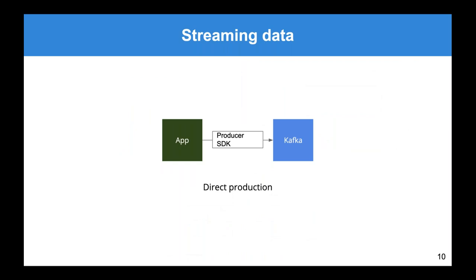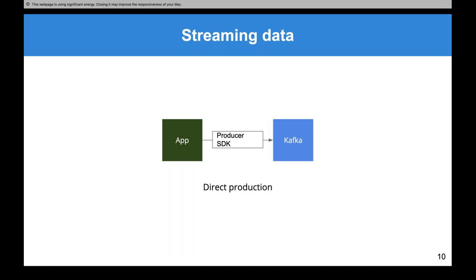Let's build up an architecture from scratch. We have Kafka, and an application — maybe a shopping cart app, maybe a server for a mobile game. We're going to directly produce data into Kafka using the Kafka producer SDK in our application, writing one message per checkout, one message per user click. And then we have data in Kafka. We can't actually do anything with it yet, but that's step one.